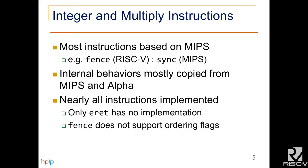Most of the instructions in these two modules are based on GEM5's implementation of MIPS. For example, the fence instruction for RISC-V is similar to MIPS's sync instruction, so the implementation was borrowed from there. The internal behaviors for the ISA in GEM5 were based off of those of MIPS, and some were also from Alpha.